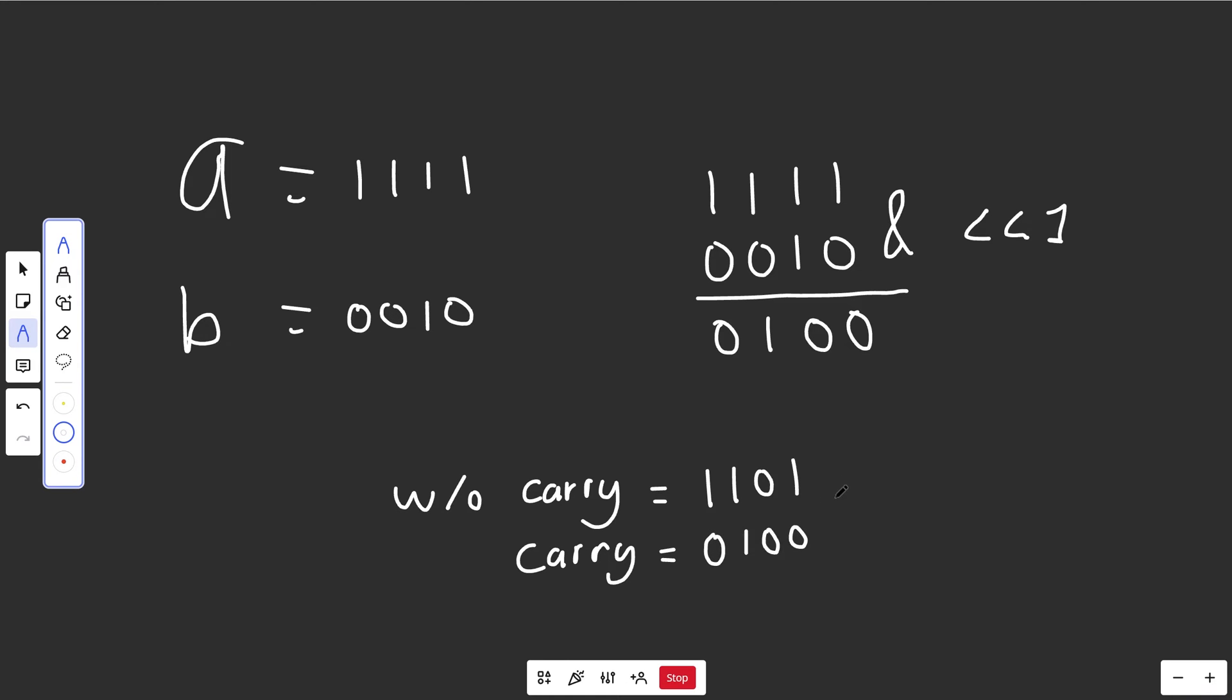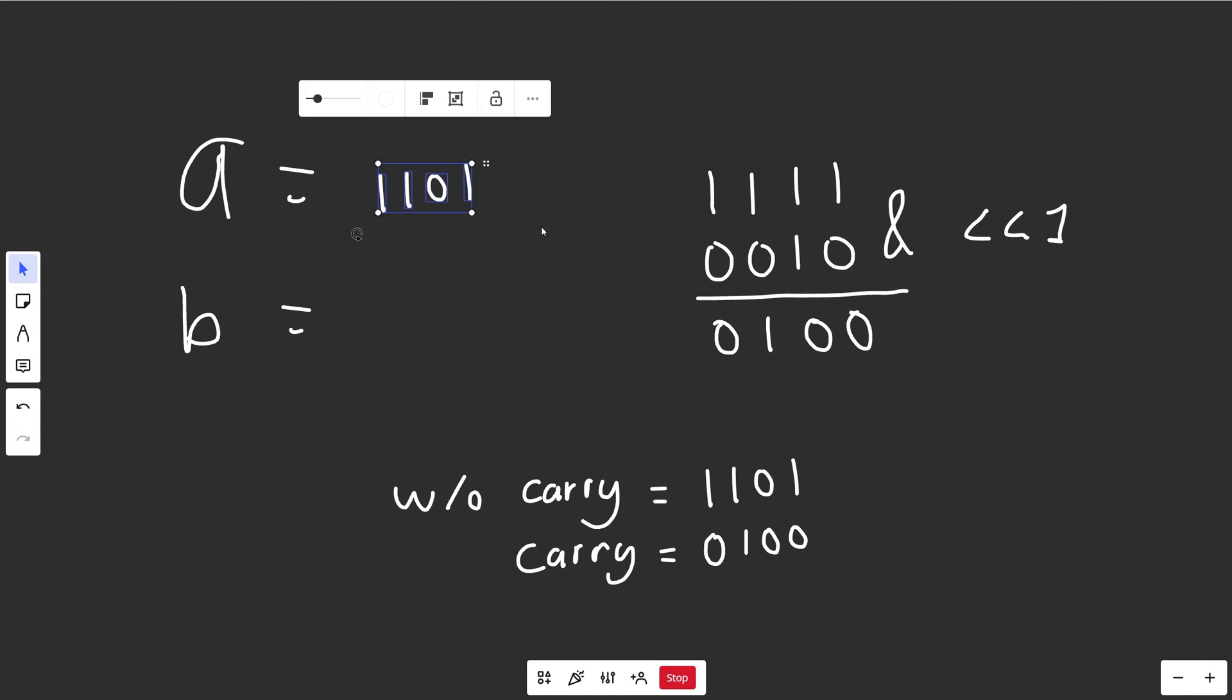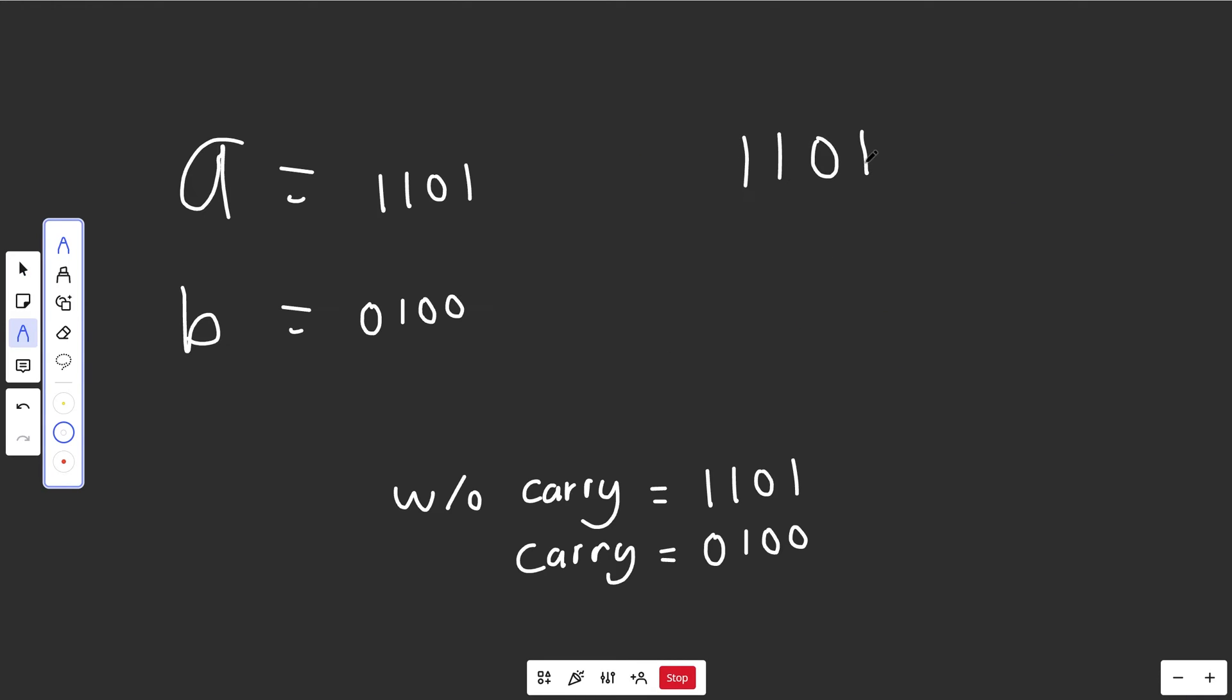After you've figured out these two things, we then update both of these. So A is going to get updated to the without carry portion, and B is going to get updated just to be the carry portion. And then you just rinse and repeat this. So what we're going to do is take those two numbers here. We take 1, 1, 0, 1. We're going to XOR that with 0, 1, 0, 0. That is going to give us 1, 0, 0, and 1. So here's our sum without the carry. Again, 1 and 0 makes 1, 0 and 0 makes 0, 1 and 1 makes 0, but then ignore that carry. So 1 and 0 makes 1.